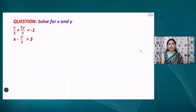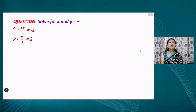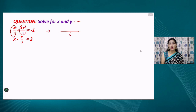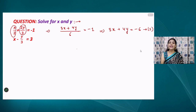Let us discuss one more question using the elimination method before we move to application-based questions. The question asks to solve for x and y where the coefficients are in fractional form: (1/2)x + (2/3)y = ... and the second equation also has fractions. Taking LCM, we can rewrite the first equation as 3x + 4y = −6. This is our equation number one.